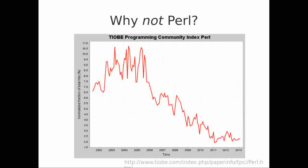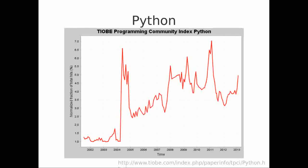When we look at the programming community index — basically what fraction of code found in online repositories is written in each language — you can see that in the early 2000s through 2005, Perl was really dominant, with over 10% of code in online repositories written in Perl. But over the last 5 to 10 years, the importance of Perl has been somewhat declining. In contrast, Python has grown over that same period and has really replaced Perl as a dominant programming language widely used on the web, though Python is still not as popular as Perl was in its heyday.